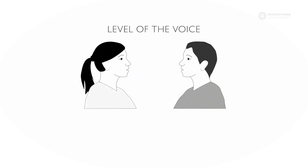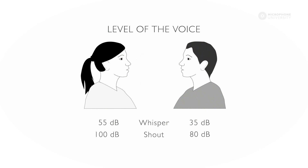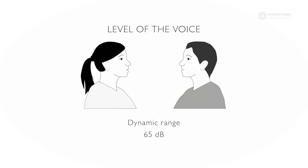The level of the voice varies a lot from person to person. A whisper can be as soft as 35 dB from one person and as loud as 55 dB from another. One person's shout might only be 80 dB and another person's might be 100 dB. So the dynamic range of the voice can be as much as 65 dB.